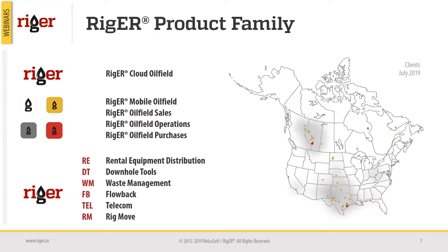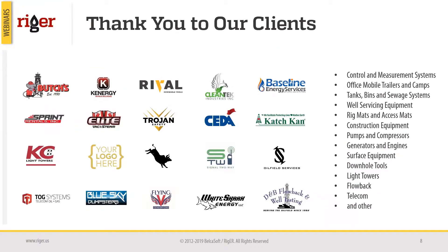Rigor has a suite of mobile applications depending on the functions of your operations in the oil field — from general dispatch to sales, operations, and purchases — allowing you to perform many different operations in the field and connecting to your main cloud database through the internet. Rigor also has a number of industry-specific applications, including rental equipment distribution, downhole tool solutions, waste management, flow back, and telecommunication tools management. Most of our clients are in Canada and the US, and we enjoy helping companies of varying sizes with their operations management.